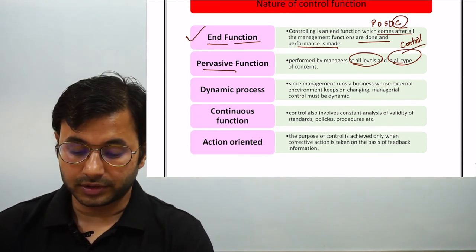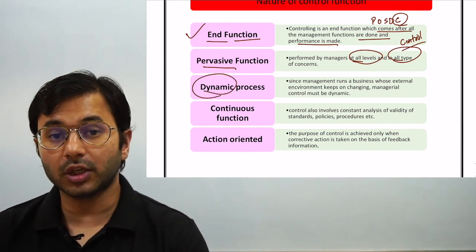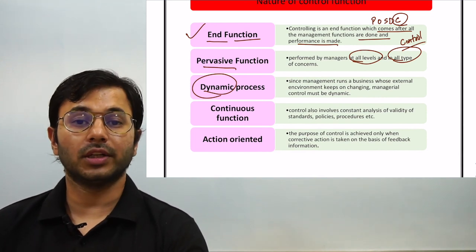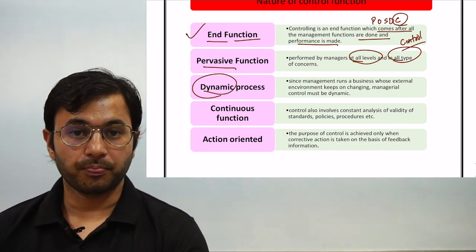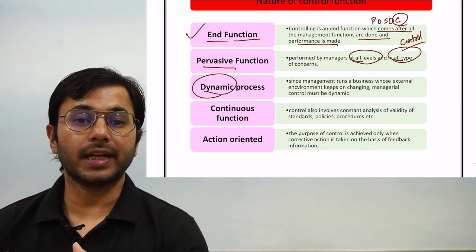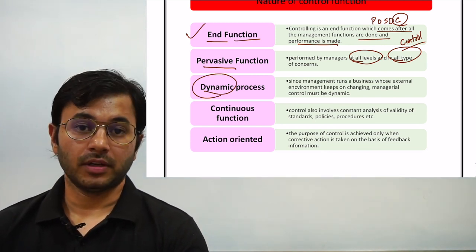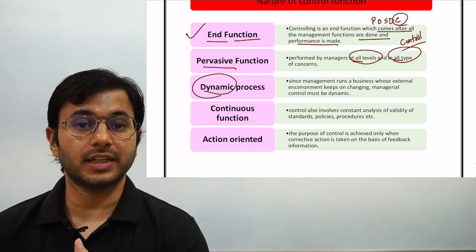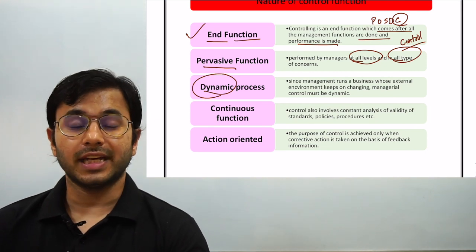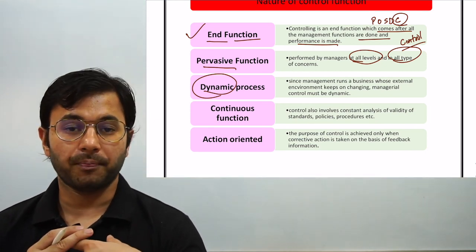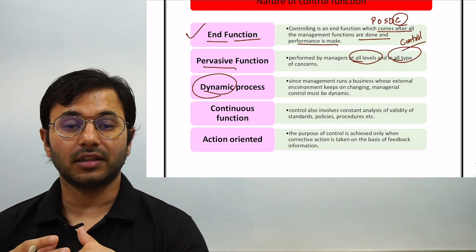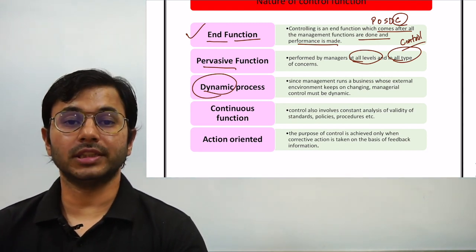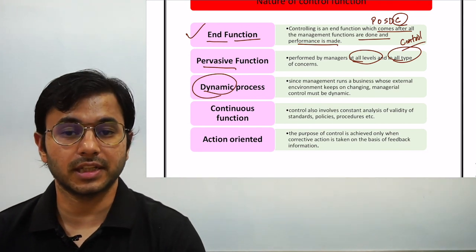Dynamic process — dynamic means it has to keep changing. Not only the control function but also the functions within control function. Whether it is standards — standards also need to change if they are not in line with the present scenario. The actual performance needs to change every day if it is not in line with the standards and not in line with the environment it is surrounded by. Everything that comes under control has to be dynamic, has to be flexible to changes happening in the external and internal environment.